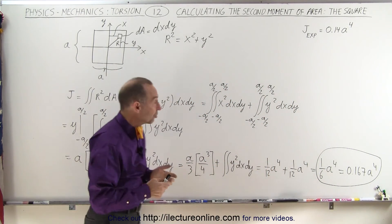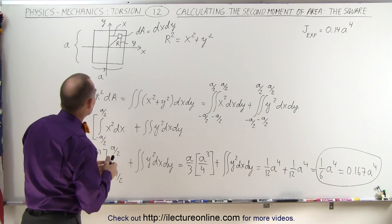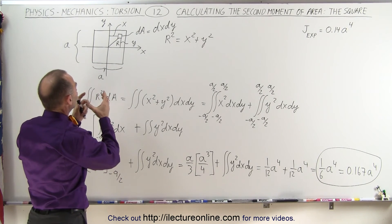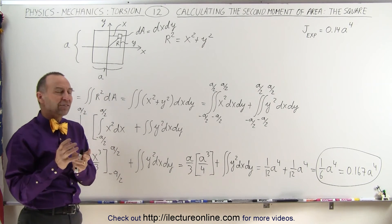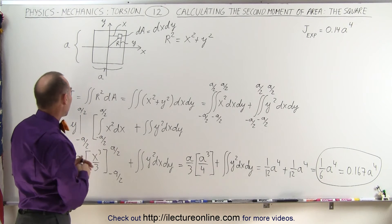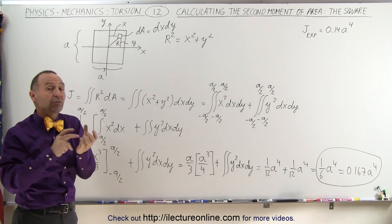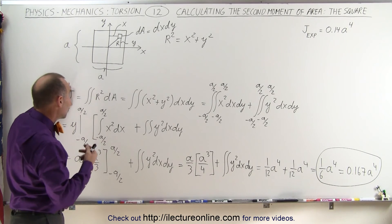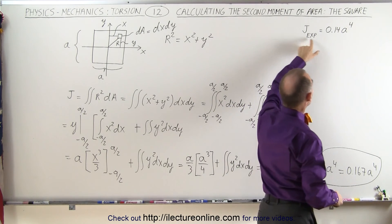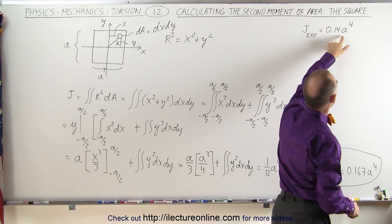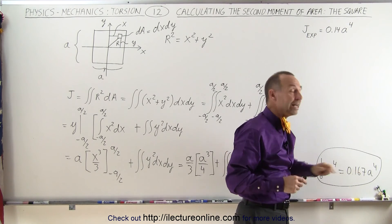Now, in a previous video, we mentioned that the only way you can get an analytical result that is accurate is if you have a circle. In a square, a rectangle, or any other shape, what we find is that if we calculate the analytical value for the torsion constant, and then we measure experimentally the value of the torsion constant, we actually get different values. Notice here we wrote down the experimental value, which is about 0.14a to the fourth, and analytically we get 0.167a to the fourth.